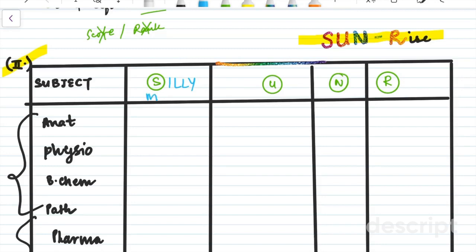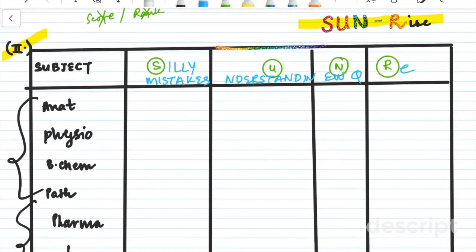So the first column is the silly mistakes I do. The second is the understanding errors that we make. The third is the new questions, the absolute new information that I get in any GT. And the fourth column is basically the recall errors which I'm making.